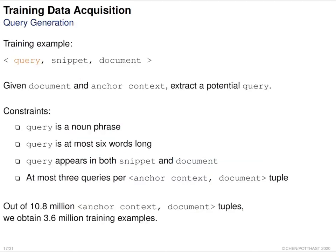We now have snippets and web documents; the next problem is to extract queries. The query should be a noun phrase of at most six words, and to avoid over-extraction we allow at most three queries per pair. Out of the 10.8 million anchor context-document pairs, we can only extract 3.6 million queries, because many pairs could not yield noun phrases appearing in both the snippet and the document.